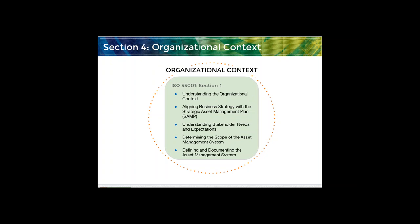The first section of real value within ISO 55,001 is Section 4 — sections 1, 2, and 3 are introductory. Section 4 relates to your organizational context. It talks to having a strategic asset management plan in place, ensuring we know who the stakeholders are and what their needs should be, looking at the scope of the asset management system, and defining and documenting the asset management system.